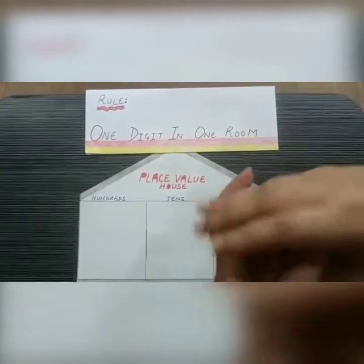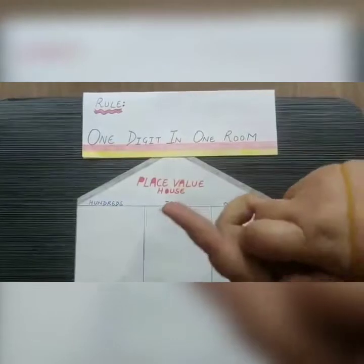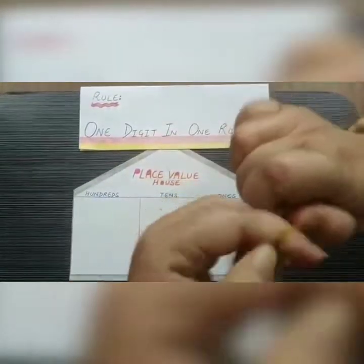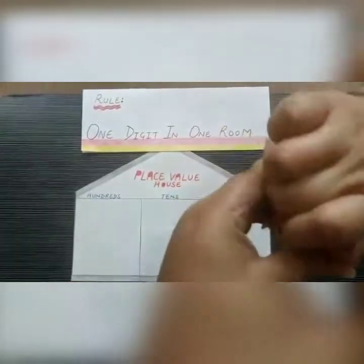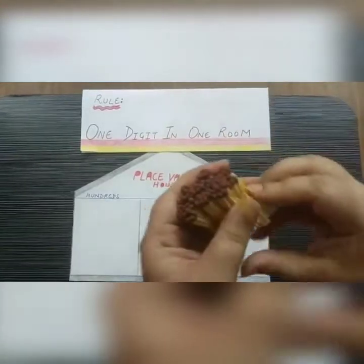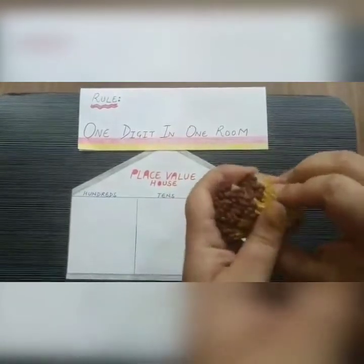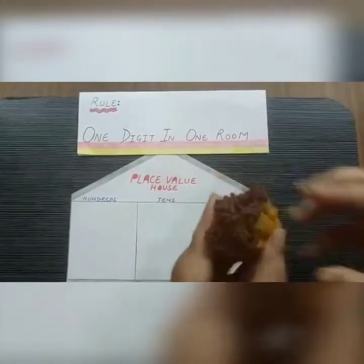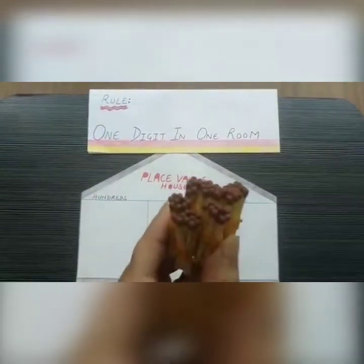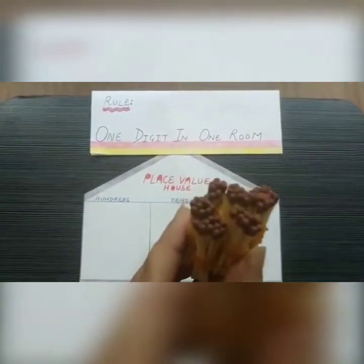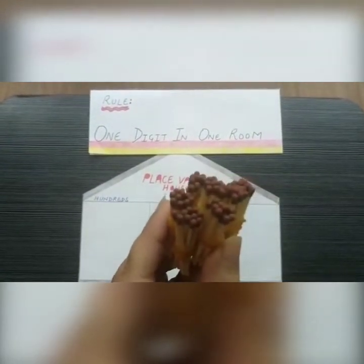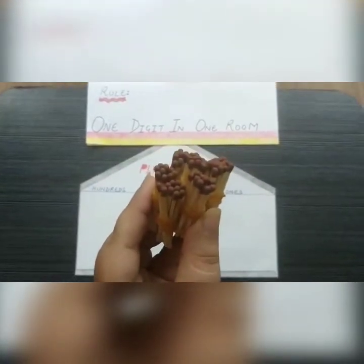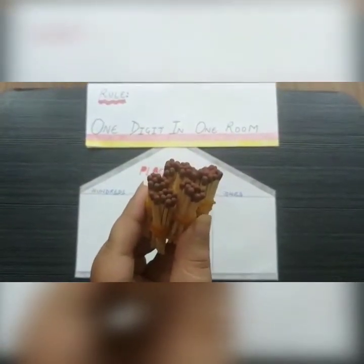Now we will form a bundle using all of them. We have a bundle of 10 tens, and we know that 10 tens is equal to the number 100. So we will place it in the hundreds place.